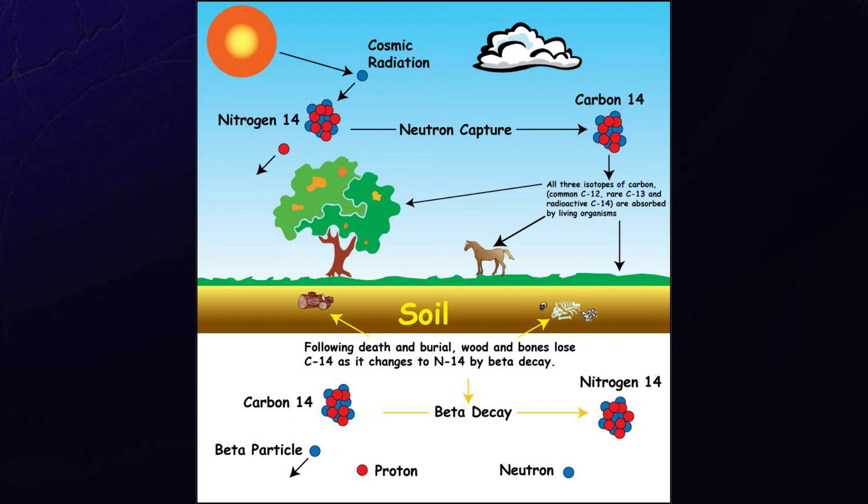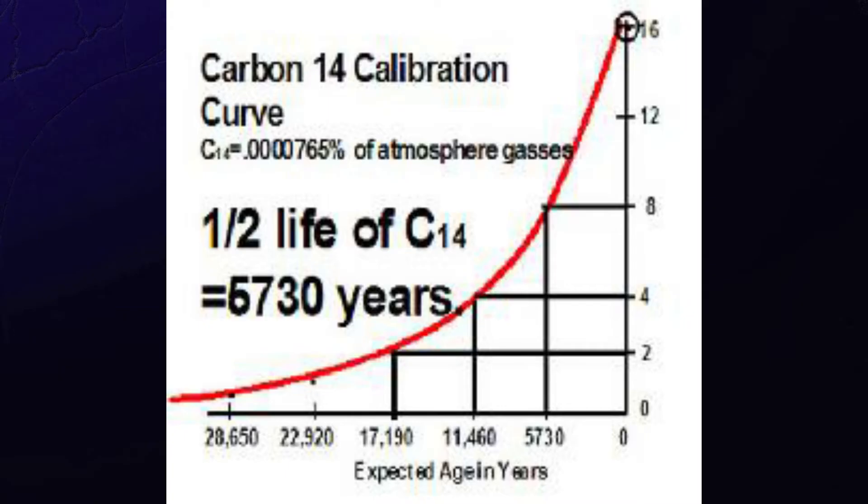Now, the very clever scientists, the carbon daters, have devised a C14 calibration curve. And according to their calibration, the half-life of C14 is 5,730 years. That means after 5,730 years, half of the C14 has degraded back to nitrogen again.